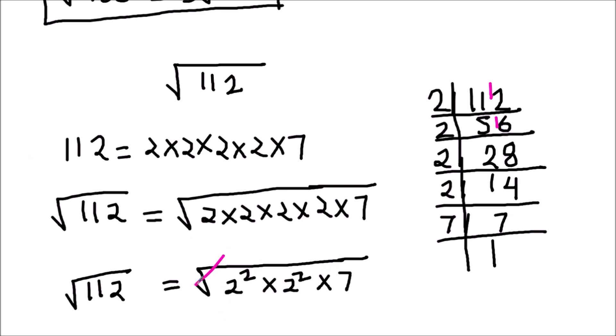The square root sign gets cancelled with 2 squared and this 2 squared. Both the 2's will come out of the square root sign, leaving 7 under the square root.